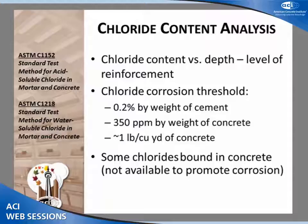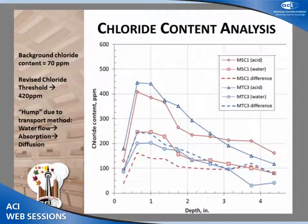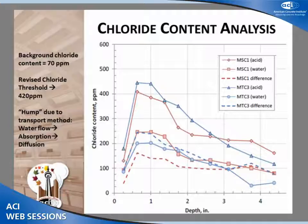The key laboratory analysis helping us understand the structure's condition and develop our service life model was chloride content. There are two ASTMs for this — acid soluble and water soluble. What we need to know is the chloride content at the depth of reinforcement. The corrosion threshold is roughly 350 parts per million by weight of concrete. Some chlorides are bound internally — either chemically or physically — and can't promote corrosion. So we run the difference between acid soluble and water soluble to establish the background chloride content not available to promote corrosion.